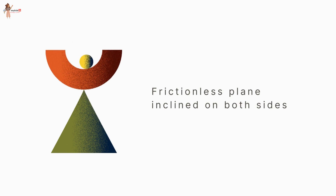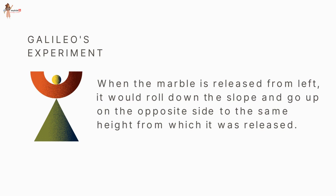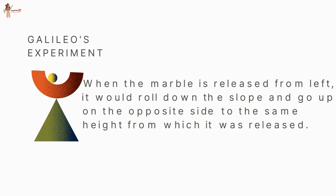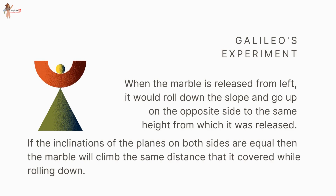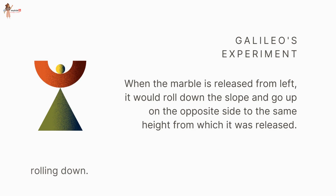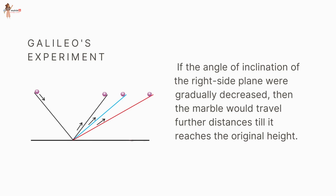A marble is kept on an ideal frictionless plane inclined on both sides. Galileo argued that when the marble is released from the left, it would roll down the slope and go up on the opposite side to the same height from which it was released. If the inclinations on both sides are equal, the marble will climb the same distance it covered while rolling down. If the angle of inclination of the right-side plane is gradually decreased, the marble would travel further distances till it reaches the original height.